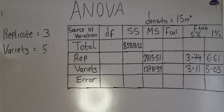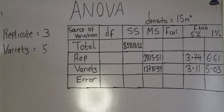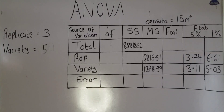If you've watched the previous class that we had on ANOVA tables — both complete randomized design and randomized complete block design — you shouldn't find this difficult to complete. So just pay attention.